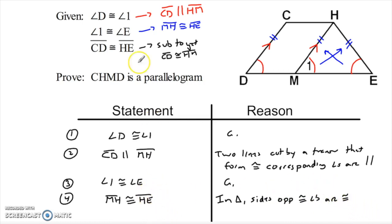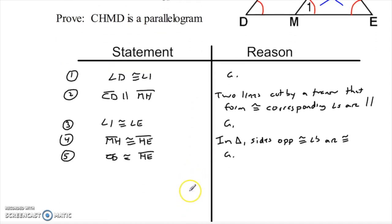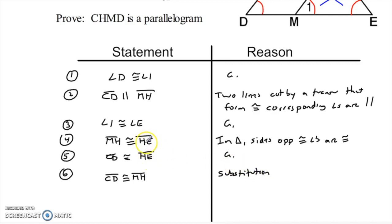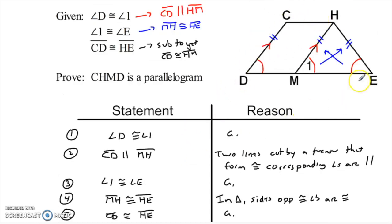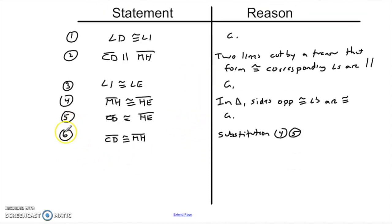So I have MH congruent to HE, and they told me in the other given that CD was congruent to HE as well. If CD is congruent to HE and MH is congruent to HE, then I can do a little substitution: CD must be congruent to MH. I get that with substitution on those two steps. At that point, I have a pair of opposite sides both congruent and parallel — that's all I need — so CHMD is a parallelogram.